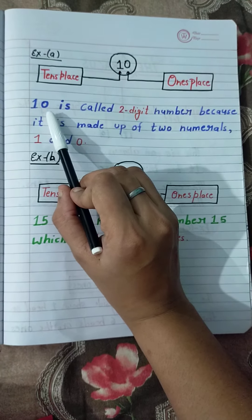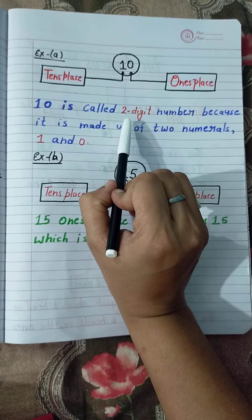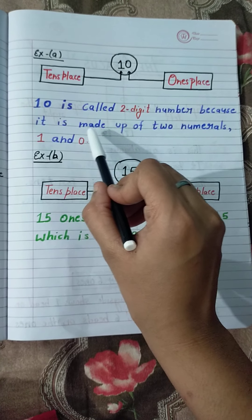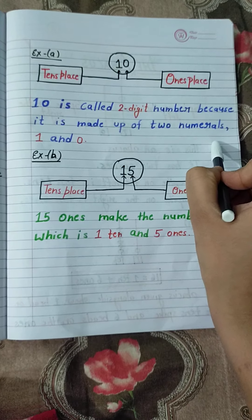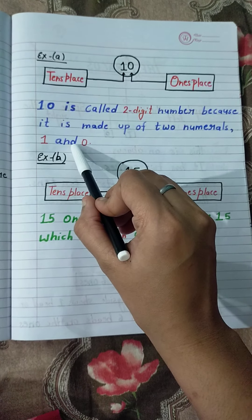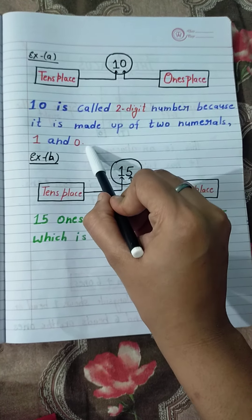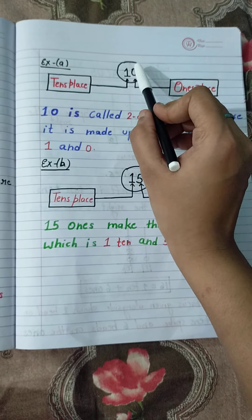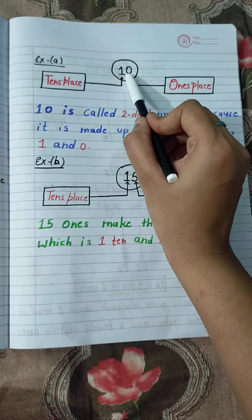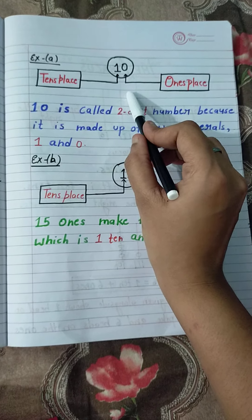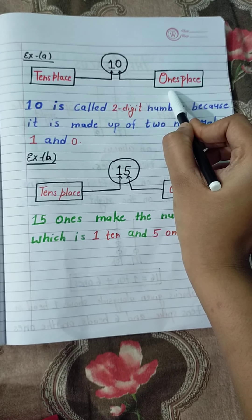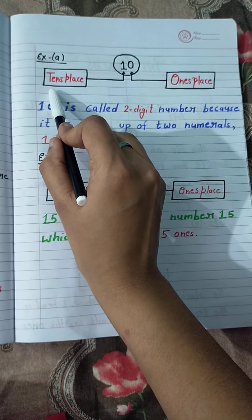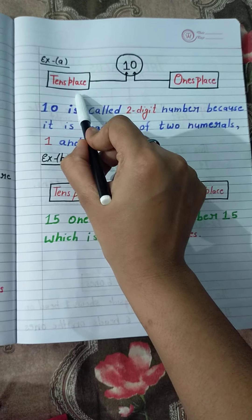10 is called a two-digit number because it is made up of two numerals: 1 and 0. That's why we call it a two-digit number. 0 is on your right side, so this is the ones place. And 1 is on your left side, so this is the tens place.